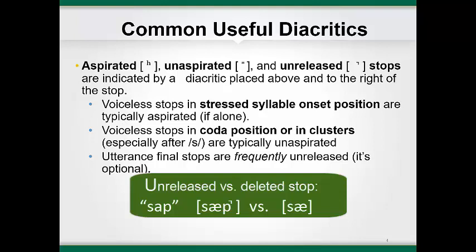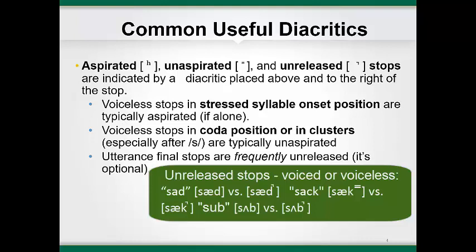Sometimes it might be hard to hear whether the consonant is really there, but we know the P is there because the word is not 'sa.' Listen: sap versus sa. Unlike the first two allophones, the unreleased stop can be an allophone of either a voiced or a voiceless stop. Released voiced stops in English are normally unaspirated, so we don't add the unaspirated diacritic for voiced stops, but we do add the unreleased diacritic for both voiced and voiceless stops. The unreleased allophone is transcribed as a small superscript corner above and to the right of the symbol—think of it as a closed door.